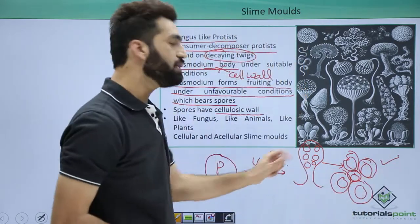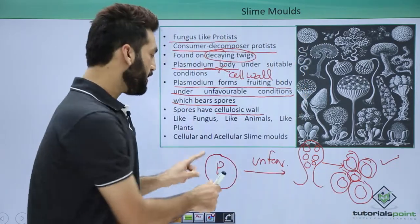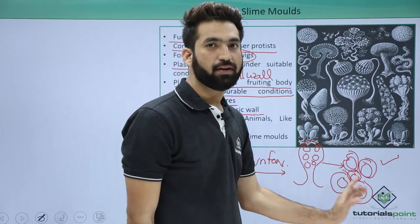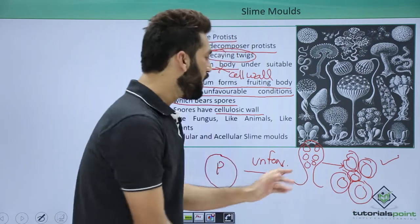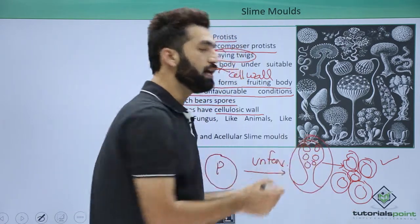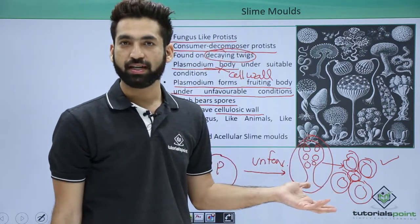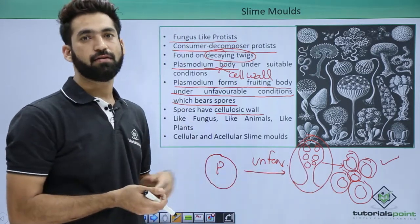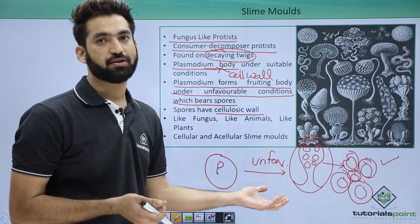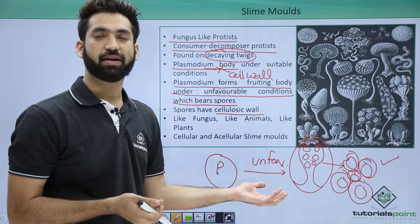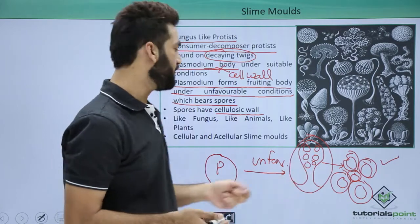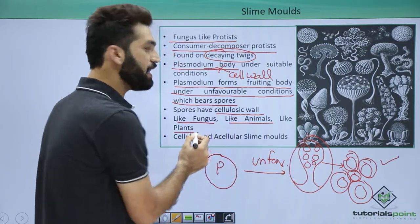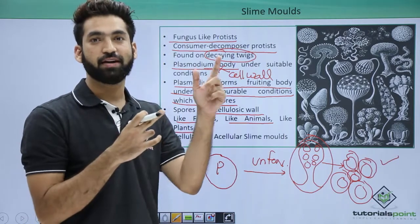At the plasmodium stage there is no cell wall — they behave like animals. At the spore stage there is a cell wall — they behave like plants. At the fruiting body stage they behave like fungus. So for a botanist they are plants, for a zoologist they are animals, and for a microbiologist — who studies fungus — they are fungus. As I mentioned, the boundaries of this kingdom are not well defined.